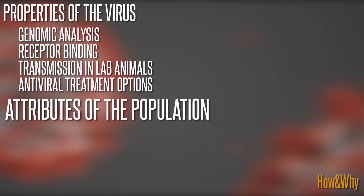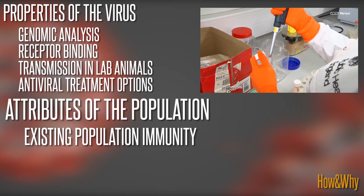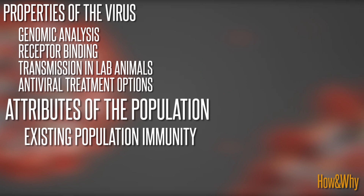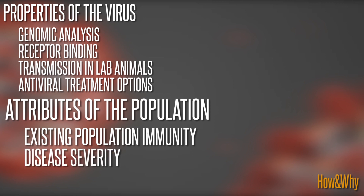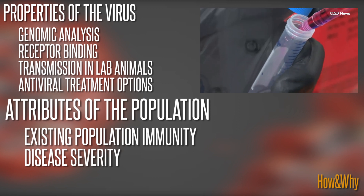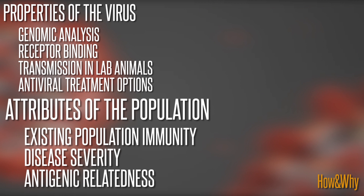Next are the attributes of the population category, containing three evaluation criteria, including existing population immunity, which refers to whether the human population has any existing immune protection against a novel virus. This criterion depends on age, geographic area, and genetic factors. Disease severity and pathogenesis measures the severity of illness caused by a particular virus in people or animals. Antigenic relatedness is a measure of how similar a virus is compared to others.